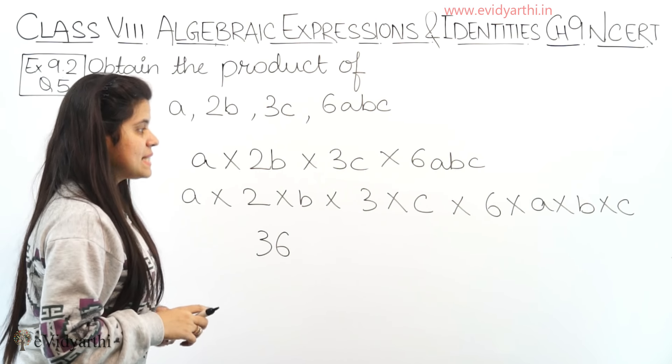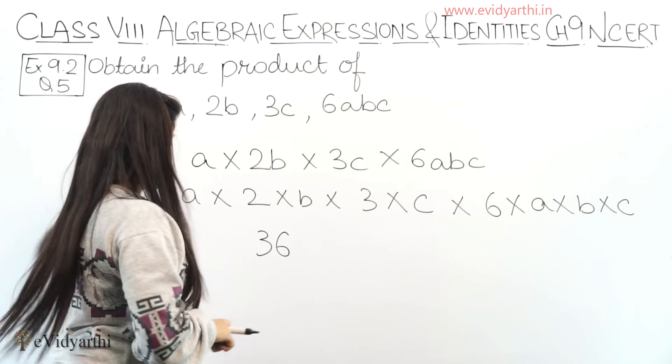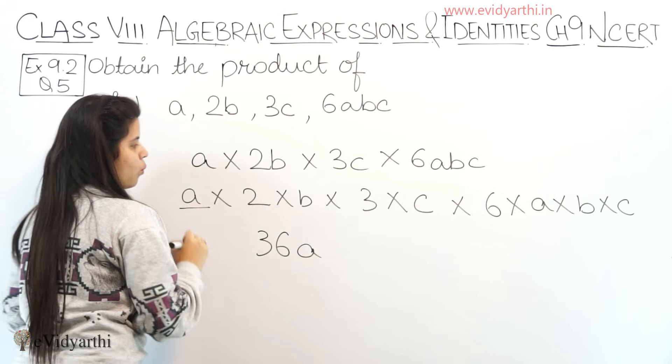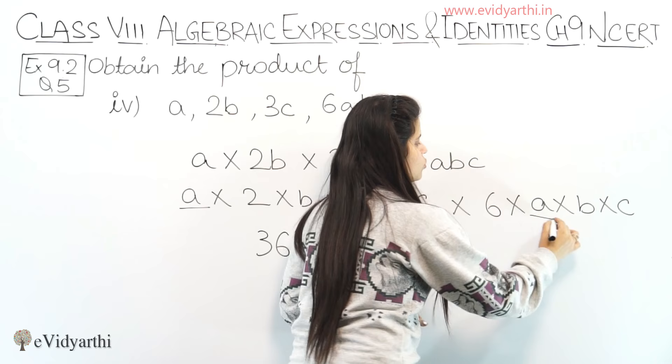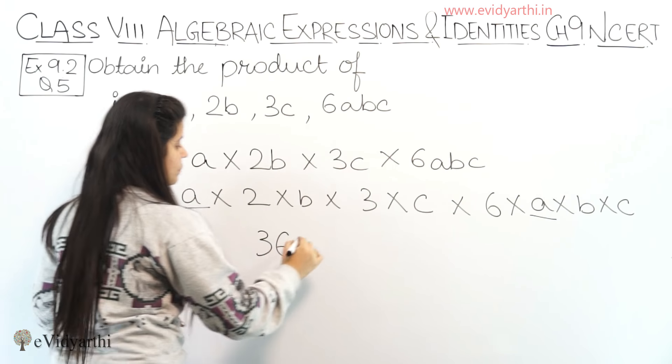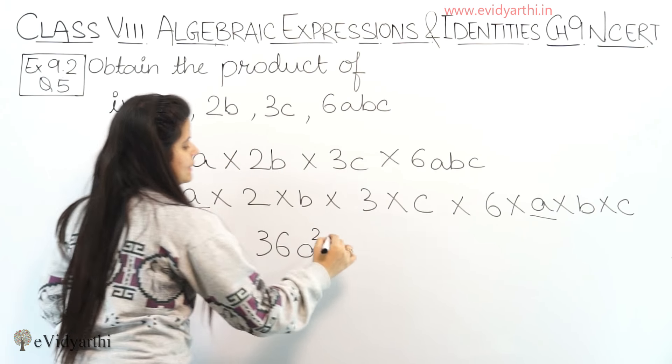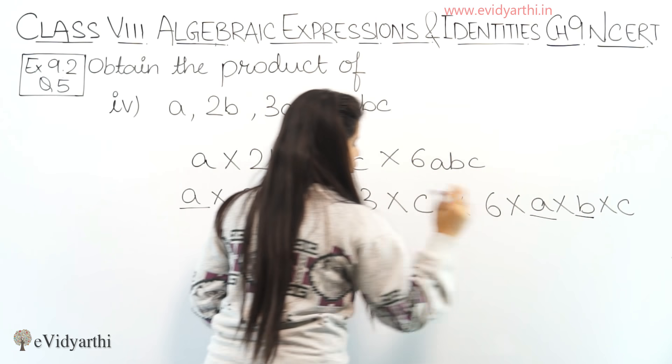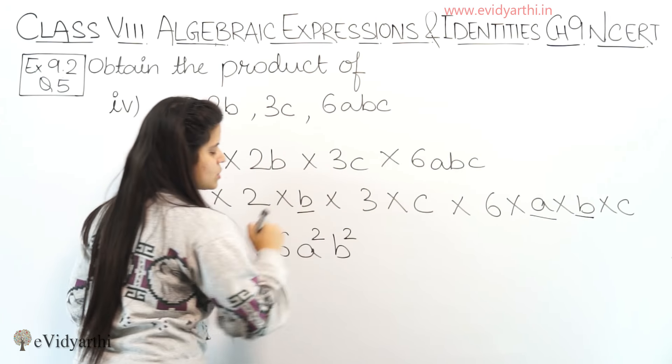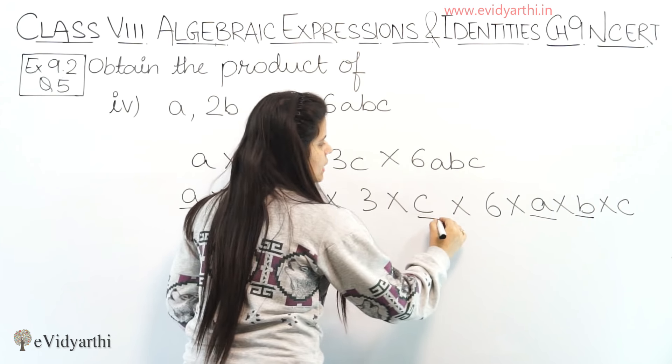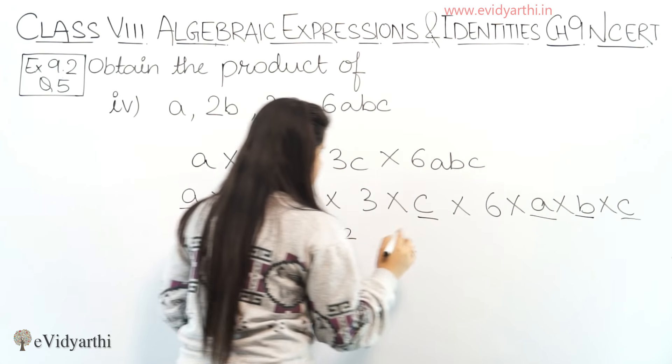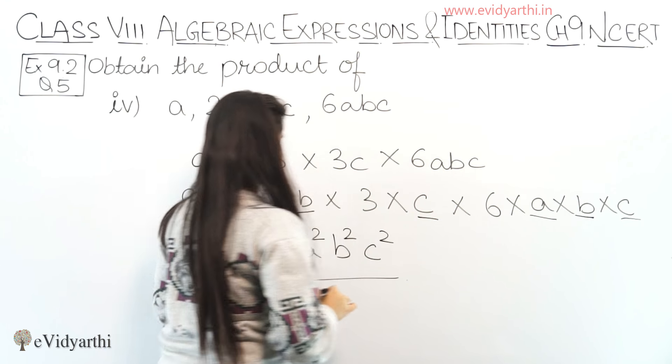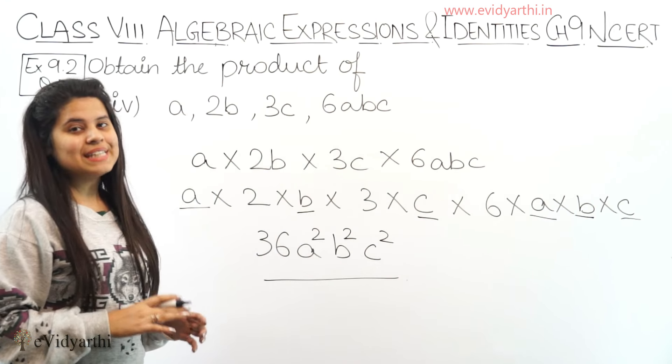Now for variables we have a, b and c. First let's take a: 1, 2. Two times a, so this will be a square. Then b: 1 and 2. Two times, so this will be b square. Then c: 1, 2. Again 2 times, so this is c square. So 36 a square b square c square is the answer. This was the 4th part.